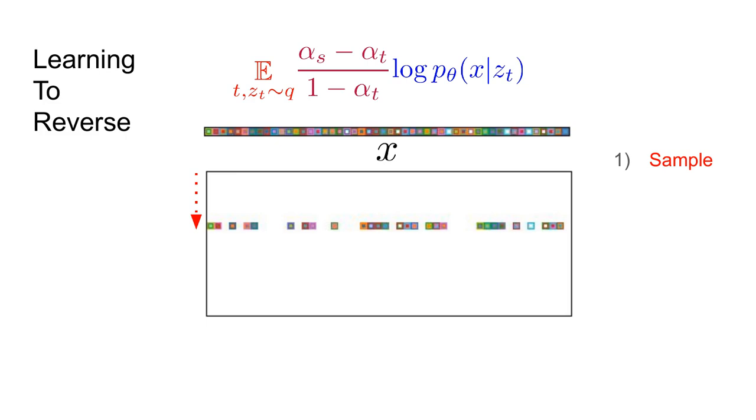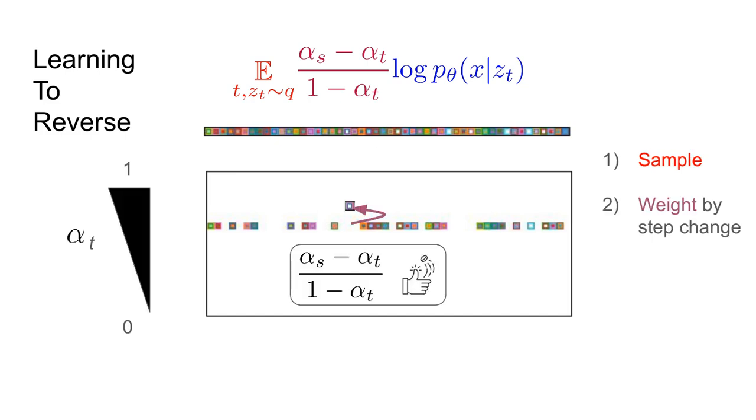So let's consider how we learn this model. Again, there's going to be three steps. We have an expectation over a weighted log probability. Step one is how we handle the expectation. We sample a time step t and mask words with probability 1 minus alpha t. Next, we need to weight the loss by how much we expect this step to change. Specifically, we weight it by the probability of unmasking.